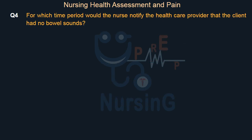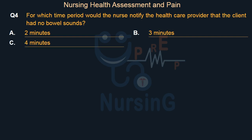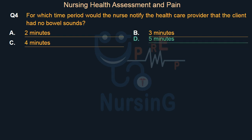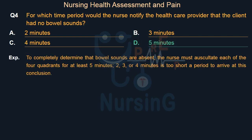For which time period would the nurse notify the healthcare provider that the client had no bowel sounds? Option A: 2 minutes. Option B: 3 minutes. Option C: 4 minutes. Option D: 5 minutes. The right answer is Option D: 5 minutes. To completely determine that bowel sounds are absent, the nurse must auscultate each of the four quadrants for at least 5 minutes. 2, 3, or 4 minutes is too short a period to arrive at this conclusion.